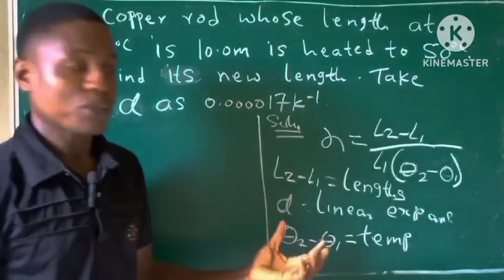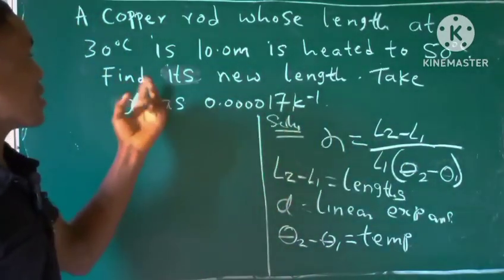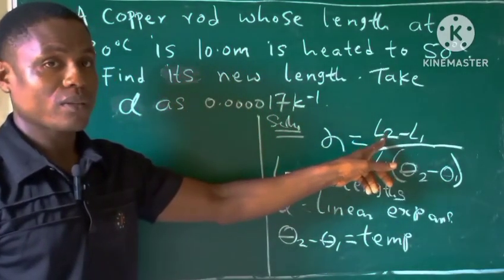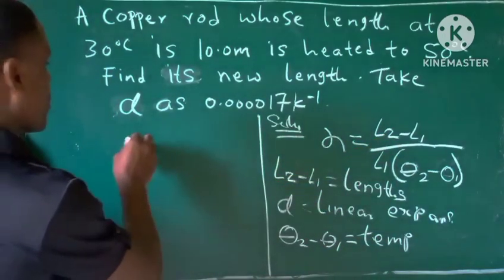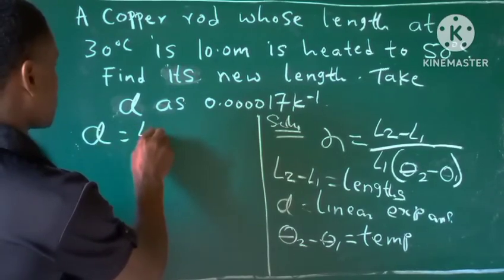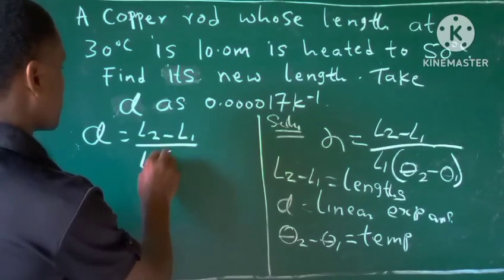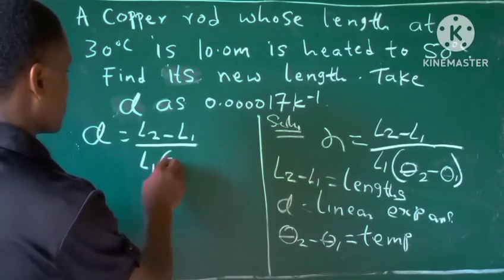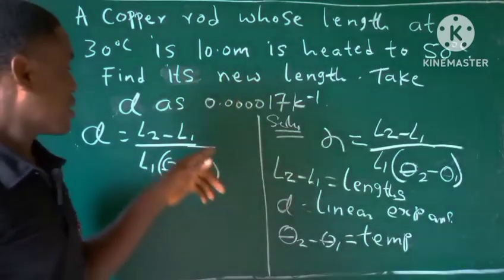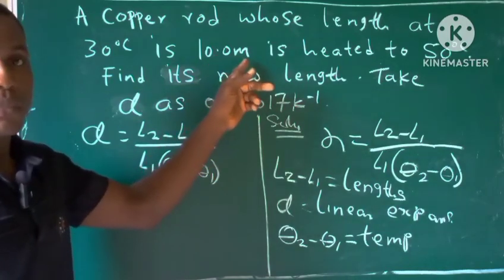From this formula we are asked to calculate the new length, so the new length is L2. Let's write the formula down: linear expansivity. If you look at the equation, the L1 is given, which is the first length, 10 meters.